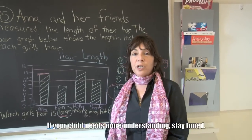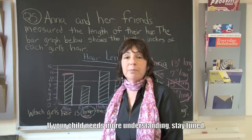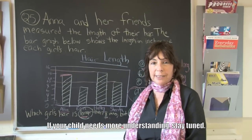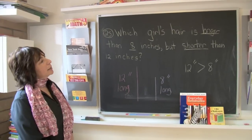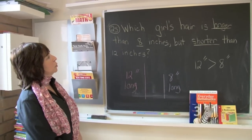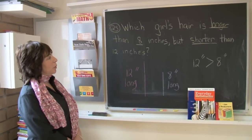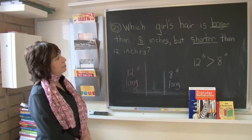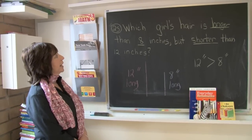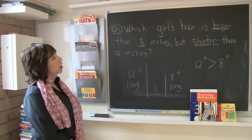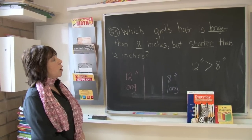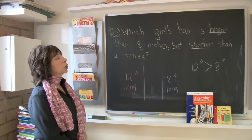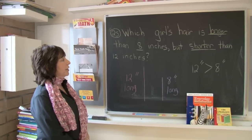Boys and girls, this is the end of the third grade math lesson — study hard, look at these problems, and you'll do great. Now let's look at question twenty-five, the very last question of Book One of the 2008 New York State math test. It says: which girl's hair is longer than eight inches but shorter than twelve inches?